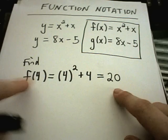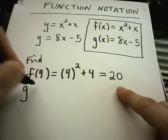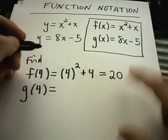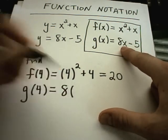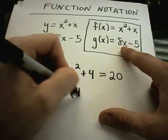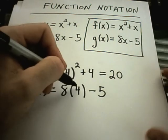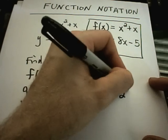So 4 squared is 16, 16 plus 4 is 20, so you could say that f of 4 equals 20. Likewise, if they said calculate g of 4, well g of 4, again I just find my g equation and everywhere there's an x I replace it with the number 4 and then I just simplify it down. So 8 times 4 is 32, 32 minus 5 is 27.